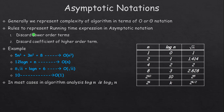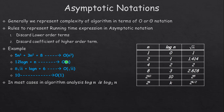Applying the rules to 5n³ + 3n² + 8: first, discard lower order terms — remove 3n² and 8, leaving 5n³. Then discard the coefficient of the highest order term — remove 5. The result is O(n³). Second example: log n + n. Comparing the two terms, n is greater than log n, so discard log n. Remaining is n; there is no coefficient to remove. Result: O(n).